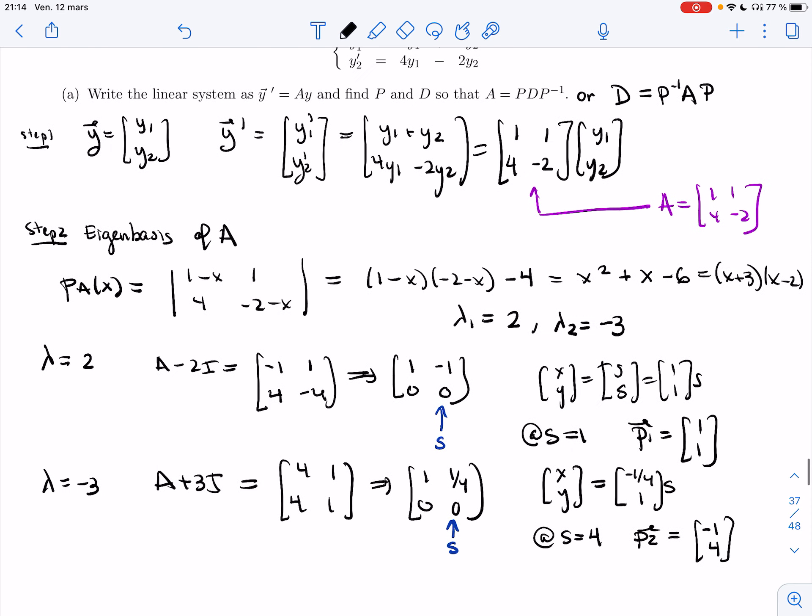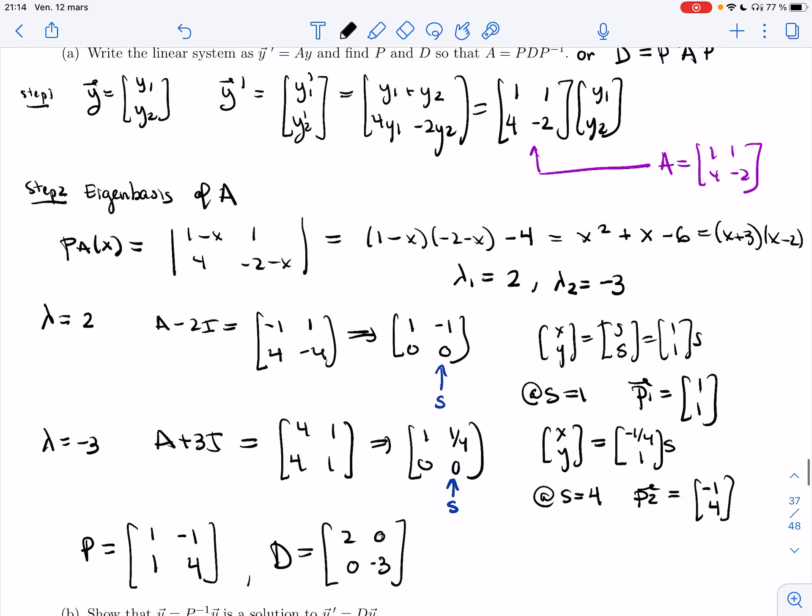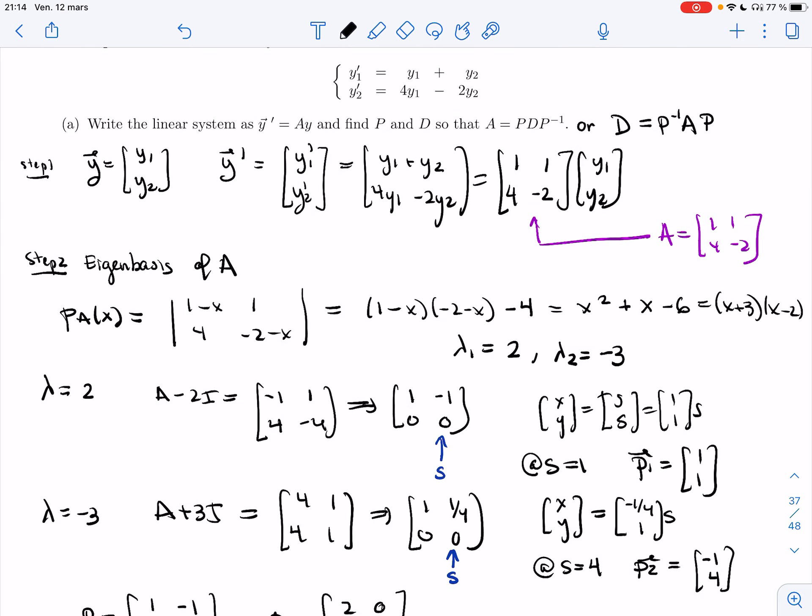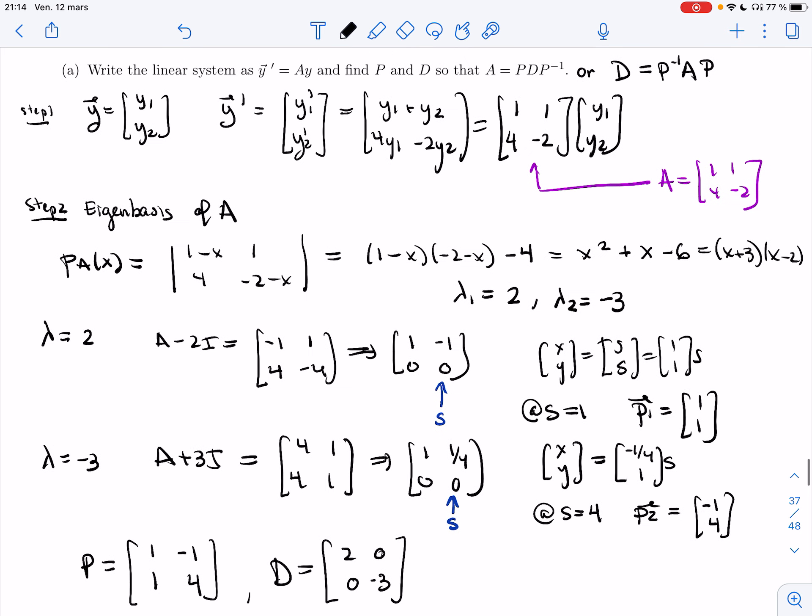So what we have is we have P, which is 1, 1, minus 1, 4. And I have D, which is the eigenvalues on the diagonal. So 2, 0, 0, minus 3. Let's just check something. That seems right.